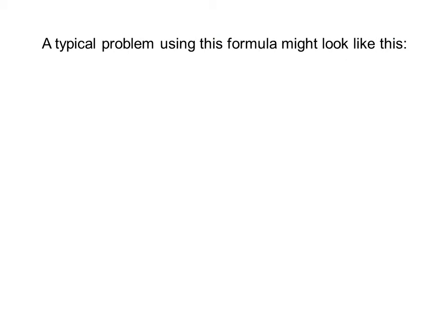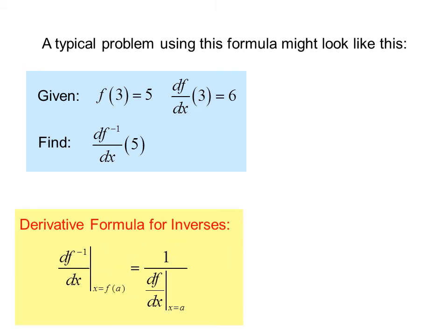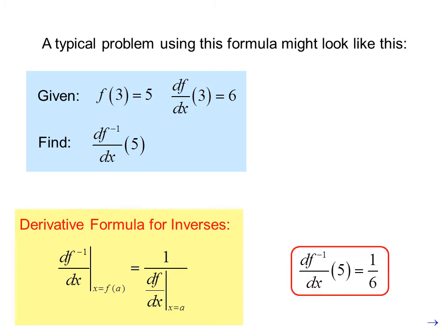A typical problem using this formula might look like this: given f(3) equals 5 and df/dx at 3 equals 6, find df inverse/dx at 5. Notice they don't give you the original function, but we can use the derivative formula for inverses. The derivative of the inverse evaluated at 5 is the reciprocal of the derivative of the original evaluated at 3, which is 6 — so the answer is 1/6. We can find this answer without actually knowing what the function is.